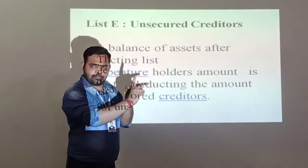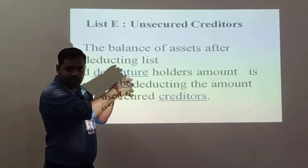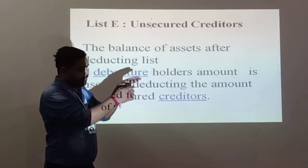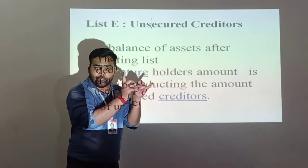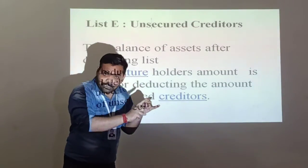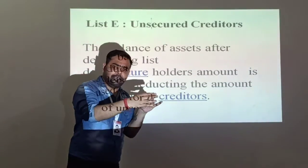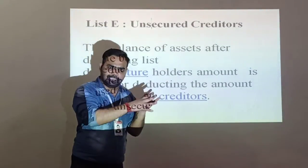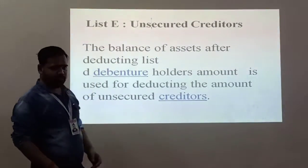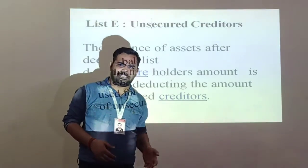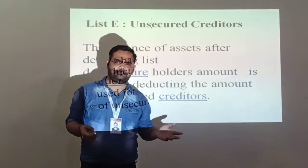Unsecured creditors are those creditors which do not have any security or anything else. So List A not specifically pledged, List B specifically pledged - add and deduct the surplus - from List C, and the balance is used for the debenture holder. After deducting the debenture holders' amount, which is debenture plus interest, the balance is used for the unsecured creditors.